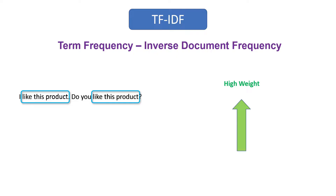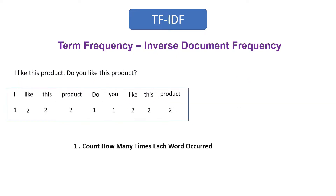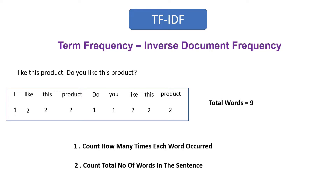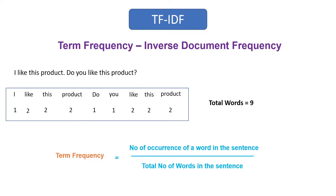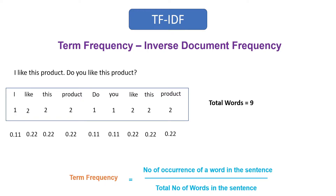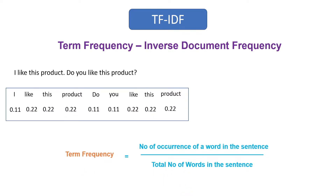Now let's see how to calculate term frequency. The first step is we have to count how many times each word occurred in the sentence, and the second step is we have to count the total number of words — it is nine in this case. Then we can use the term frequency formula, which is the number of occurrences of a word in the sentence divided by the total number of words in the sentence. Applying this formula, these three words get more weightage than others because they occurred twice whereas all other words occurred only once.